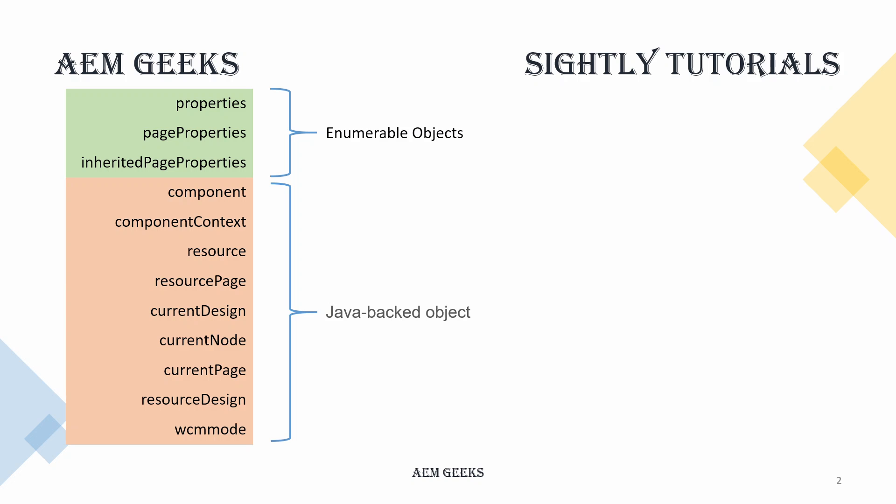The first enumerable object is 'properties' — it provides component properties, whatever you save through the dialog, you can access those properties using this object without using a Sling model. 'pageProperties' provides information about the page where your component is used. 'inheritedPageProperties' provides the inherited properties of a page — for example, a property available on the parent page will be available to your child page through this object.